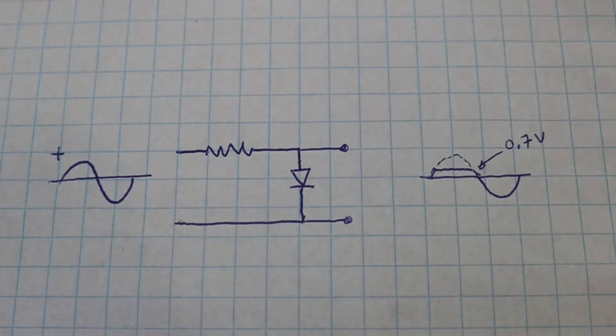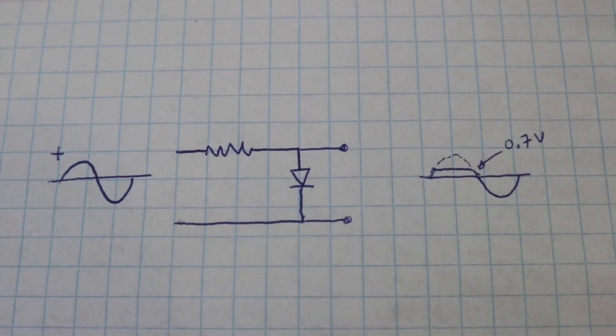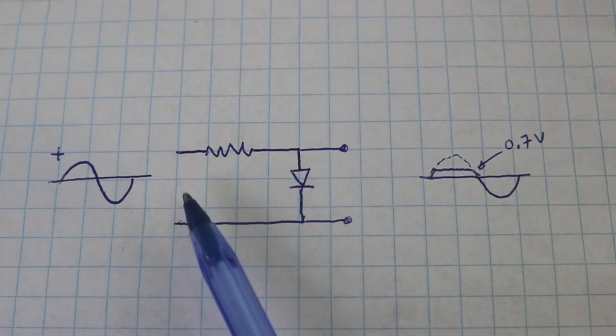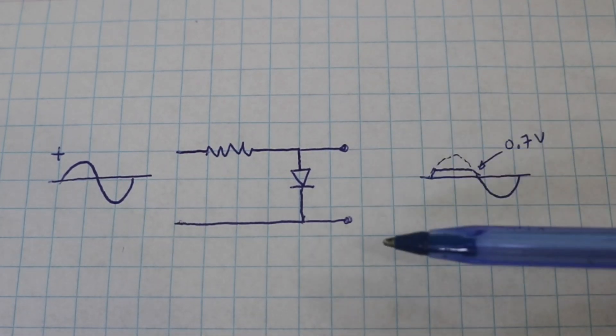Here we have the basic clipper circuit. We apply a sinusoidal AC voltage to the input and we see what happens at the output.